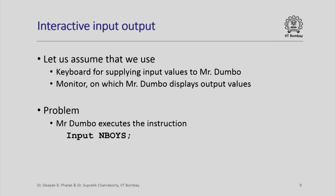Observe that when Mr. Dumbo has to do interactive input output, he will have to interact with us. We have to give input by using some device and we have to collect output by using some other device. What devices should we use? Just as we designed an artificial set of drawers for memory of Mr. Dumbo and designed a workbench, we could design something arbitrary. However, it makes sense to use a normal keyboard of a computer for supplying input values to Mr. Dumbo and a normal monitor on which Mr. Dumbo will display the output value. It makes eminent sense because we are familiar with both these devices. Assume then that an input operation will require that we type in a value on a keyboard and an output operation will cause Mr. Dumbo to bring a value and display it on the monitor. But there is a problem.